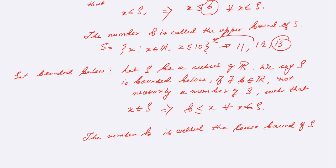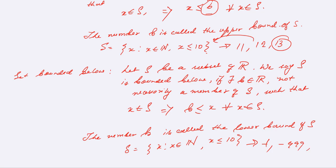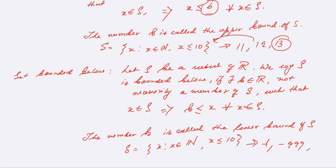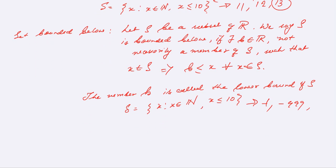The number B is called the lower bound of S. So if we have the set S equals the set of natural numbers x less than or equal to 10, then minus 1, minus 999, or minus 10 billion can all be lower bounds. It doesn't matter how large the magnitude is — since every element of the set S is greater than those numbers, they are all lower bounds.